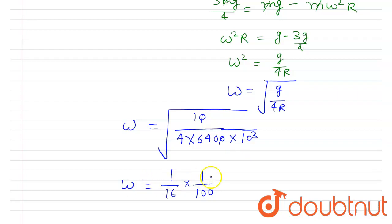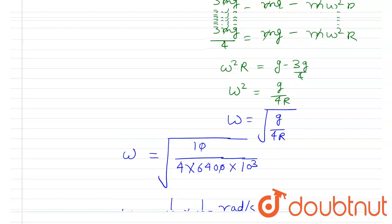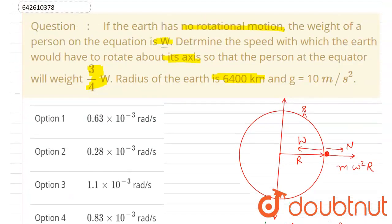So this will be the omega in radians per second. So if you see the options, the correct option here is